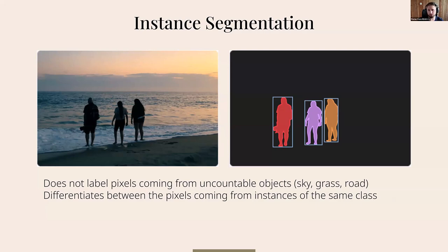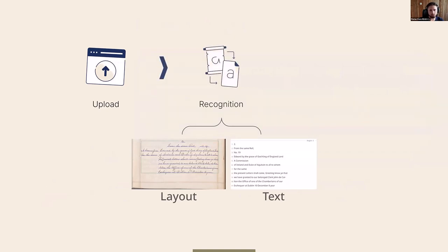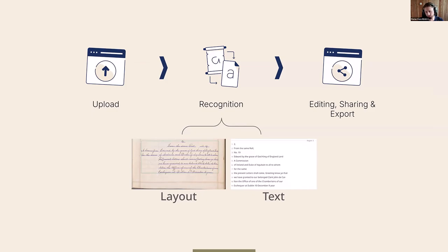This is exactly how field model technology works on historical material. You might want to know how many headlines are on those images, and with field models you can now detect those headlines. In summary, field models help you identify and categorize layout elements in your images to ensure the document structure is preserved — you know this is a headline, that is a page number — understood in a semantically accurate manner.